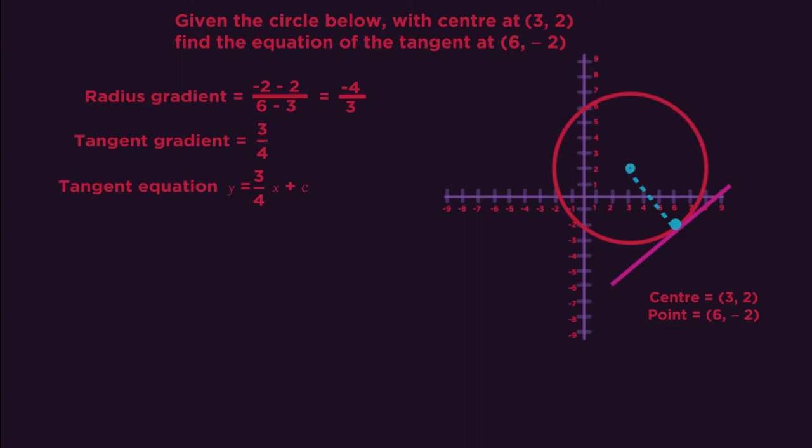Then using the coordinates of the point on the circle, substitute x is 6 and y is negative 2 in to find the missing y-intercept c value. So the equation of the tangent is y equals 3 quarters x minus 6.5.